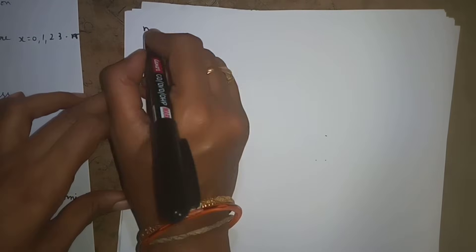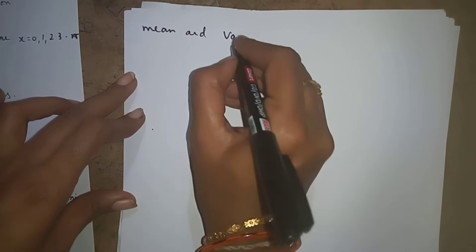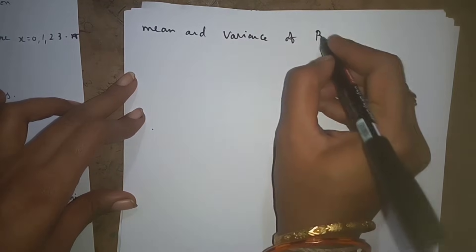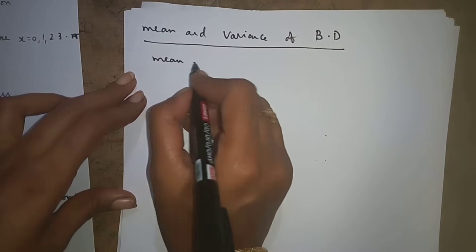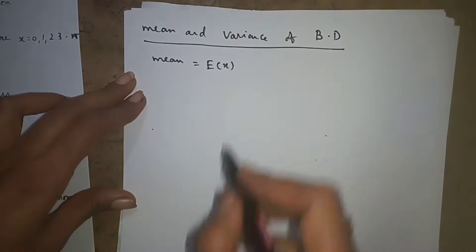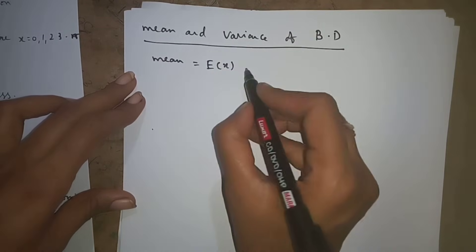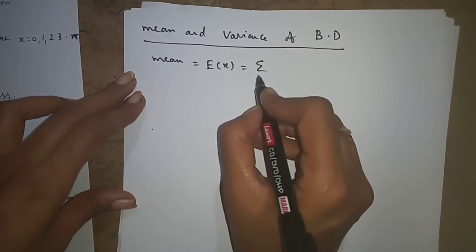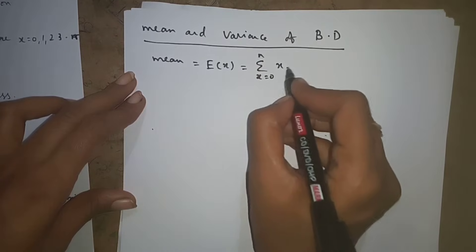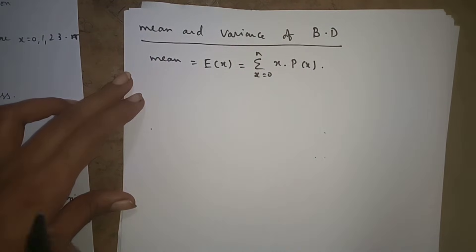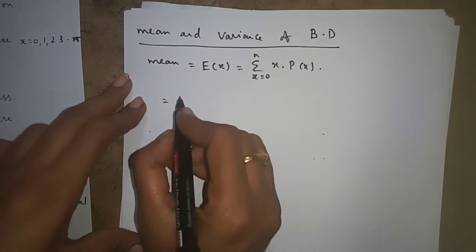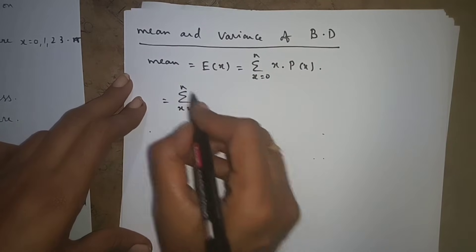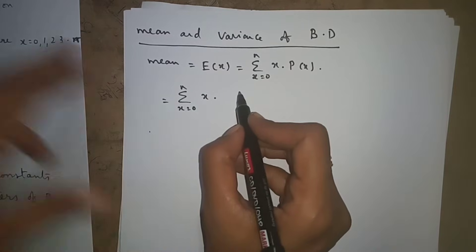Now we will derive the mean and variance of the binomial distribution. How to find the mean? Mean is equal to E(X) — expected value and mean are the same. Mean = E(X) = sigma from X = 0 to N of X · P(X). This is the expected value formula.